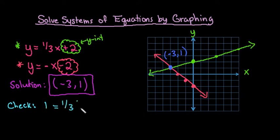So if we check it in the first equation, we would replace y with 1. And we're going to see if I take 1/3 times negative 3 plus 2, does that give me 1? So this right here is really negative 3 divided by 3, which is negative 1 plus 2. And that does work.